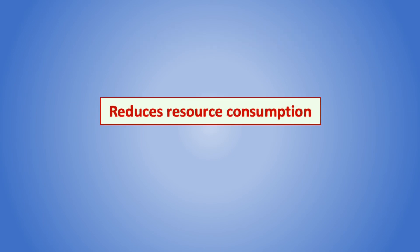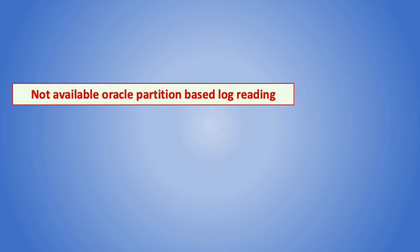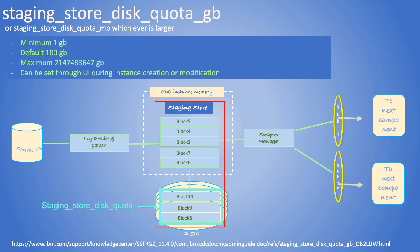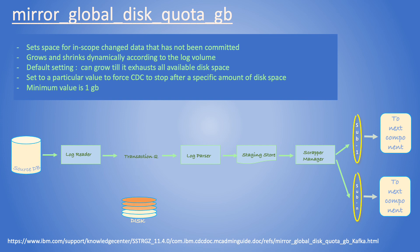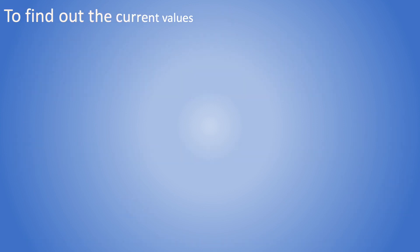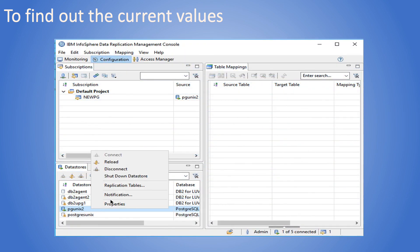Here are some key points about shared scrap. As stated earlier, staging store space can be set using a system parameter as described. This system parameter can also be used to limit the space the transaction queue can occupy on disk; leaving it to the default should be the best option. We can check the values the system parameters are set to using either the command line or the management console.